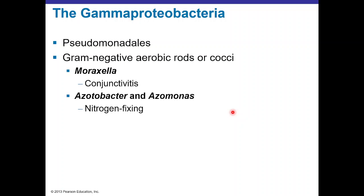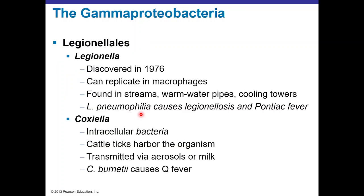Other Pseudomonadales include Moraxella catarrhalis, which can cause conjunctivitis, and Azoarcus and Pseudomonas, which are environmental Pseudomonadales capable of fixing nitrogen. Legionellales includes Legionella, discovered in 1976 when people developed pneumonia after attending a convention — the bacteria was living in the cooling towers of the building. Legionella can replicate in macrophages. Legionella pneumophila specifically causes Legionellosis and Pontiac fever.